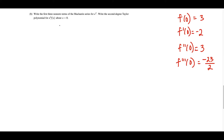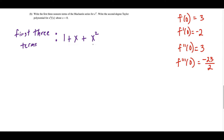For part B, the first thing we want to do is write the first three non-zero terms of the McLaurin series for e to the x. This is straight memorization. The series is 1 plus x to the first over 1 factorial, plus x squared over 2 factorial, which simplifies to 1 plus x plus x squared over 2.